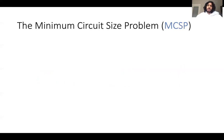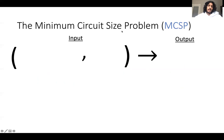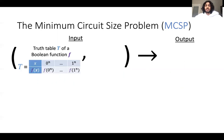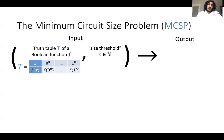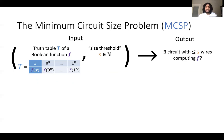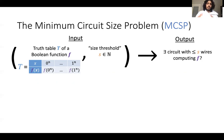So what is MCSP? MCSP stands for the Minimum Circuit Size Problem. The problem takes two inputs. The first is the truth table of a Boolean function — that's just the list of all the values a function takes on all of its inputs. This string has length 2 to the n. You're also given a size threshold s, which is just some positive integer.